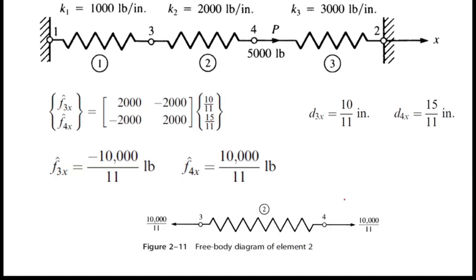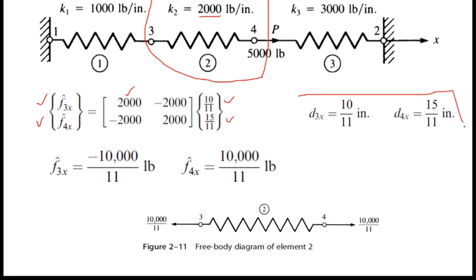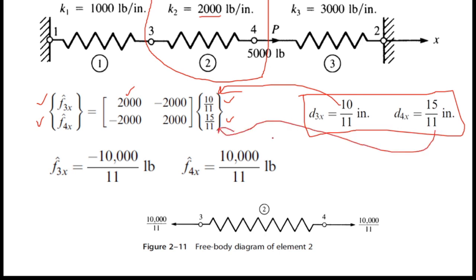Now I will consider spring 2. The node numbers are 3 and 4, which is why I wrote 3 and 4 here. The 2000 value comes from the spring constant of spring 2. The displacements of node 3 and node 4 are used: displacement of node 3 is 10/11, and displacement of node 4 is 15/11, so I substitute those values here.